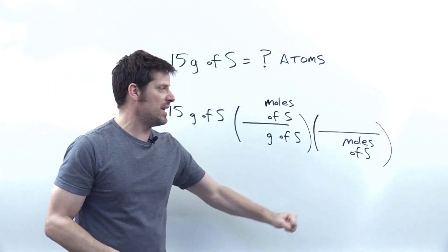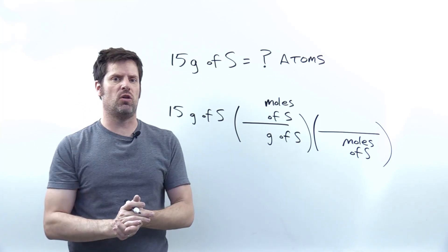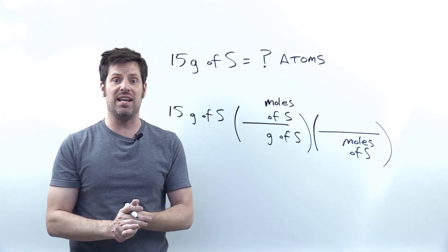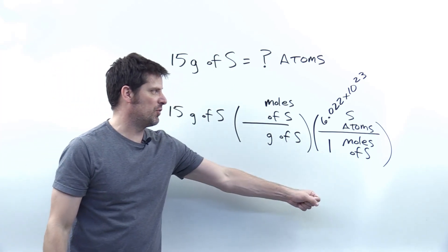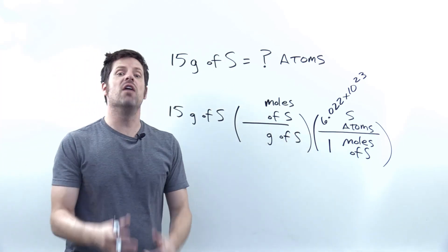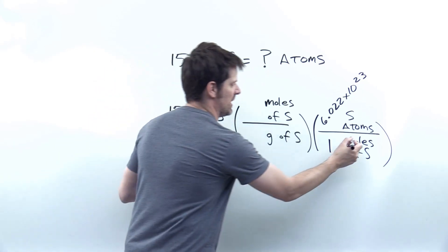Now, can I relate moles of sulfur here to individual atoms of sulfur? Is that possible? Yeah, I think it is using Avogadro's number. That is to say, one mole of sulfur contains Avogadro's number of individual sulfur atoms. Canceling out my units here,